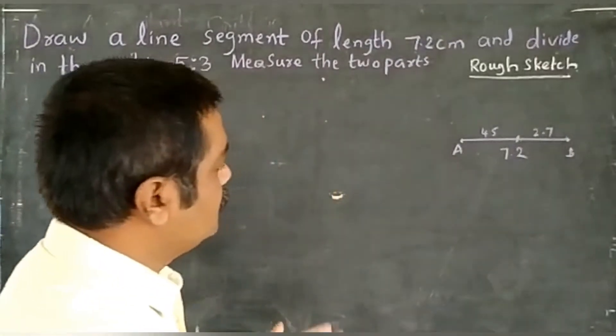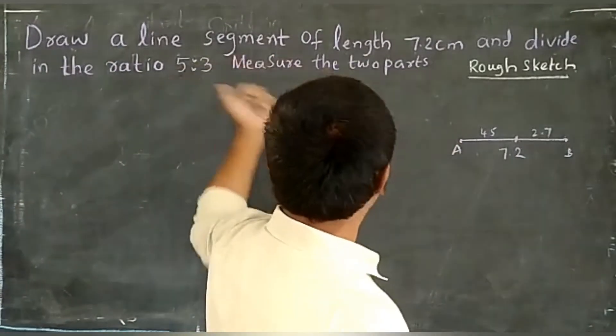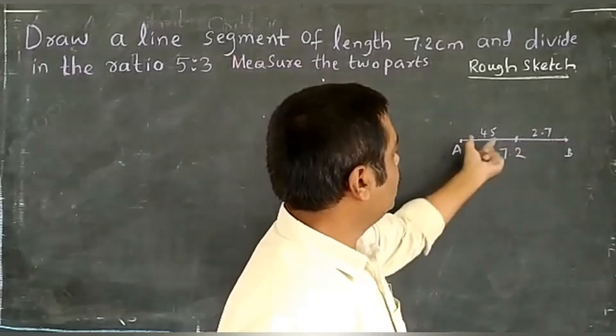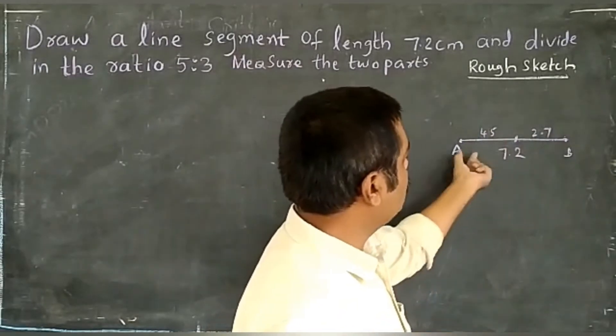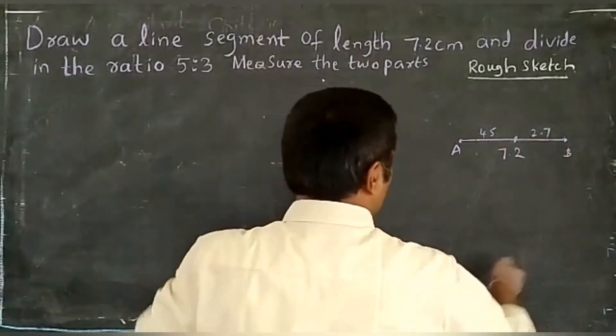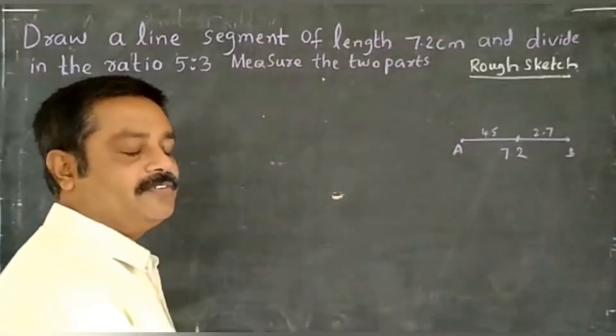You could do this directly sir - it's easy. Take 7.2 divided by 8, we get 0.9. Then 0.9 multiplied by 5 gives 4.5, and 0.9 multiplied by 3 gives 2.7. You could directly draw the line and simply cut at 4.5 centimeters - that's enough.